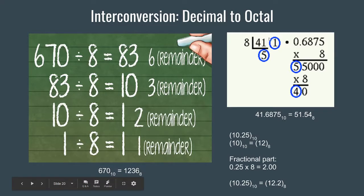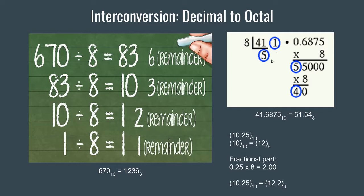Let us take a look at one more example. Here we have a decimal number 41.6875. We divide the integer part by 8. We get 5 times 8 is 40, and the remainder is 1. So the octal equivalent of 41 is 51, counting from bottom to top, so we write it as 51.